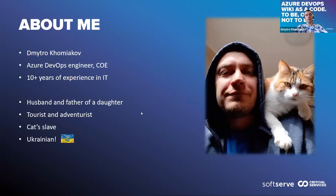My name is Dmitro Khanakov. I've been working in IT for more than 10 years, and almost two years in SoftServe as a DevOps engineer in CAE Critical Services. A few background details about me: I really like tourism and active outdoor activities. I also have a cat I got from the street, and now it controls me.